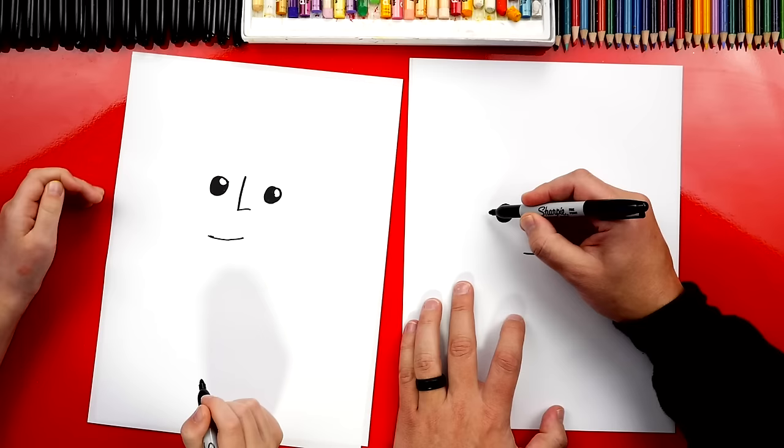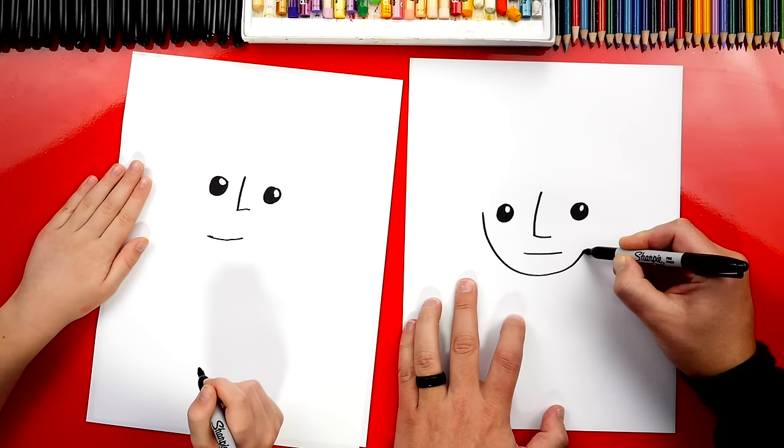Now we're going to draw the bottom of his head or his chin. We're going to start here. We're going to draw a big U. Comes back up over onto the other side.